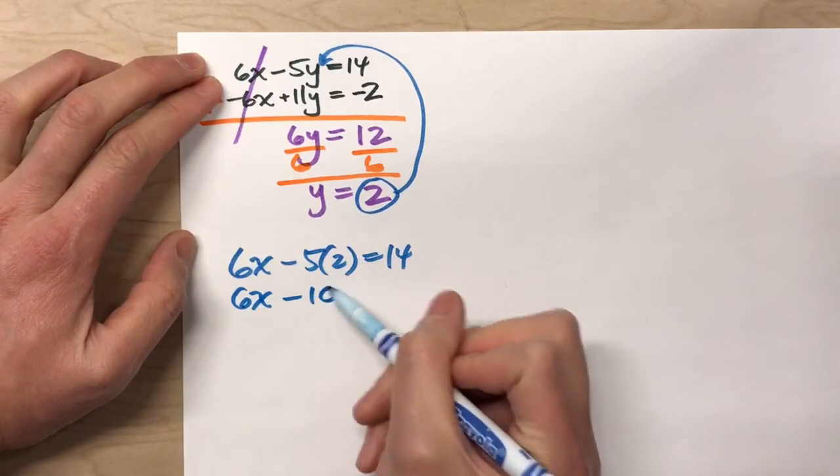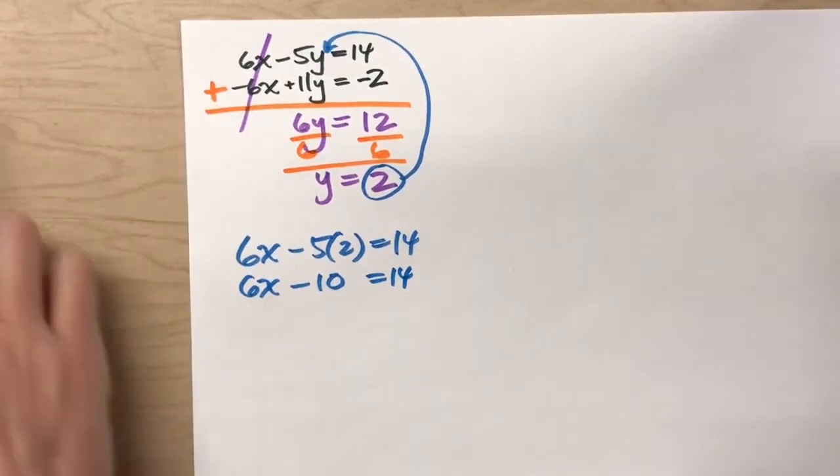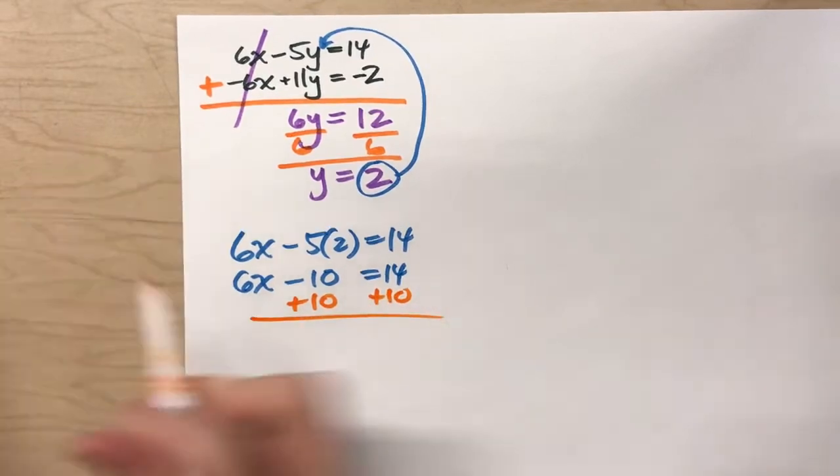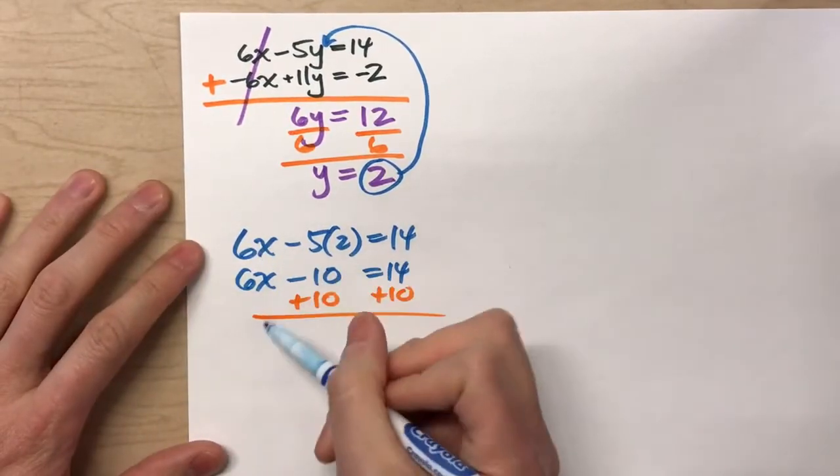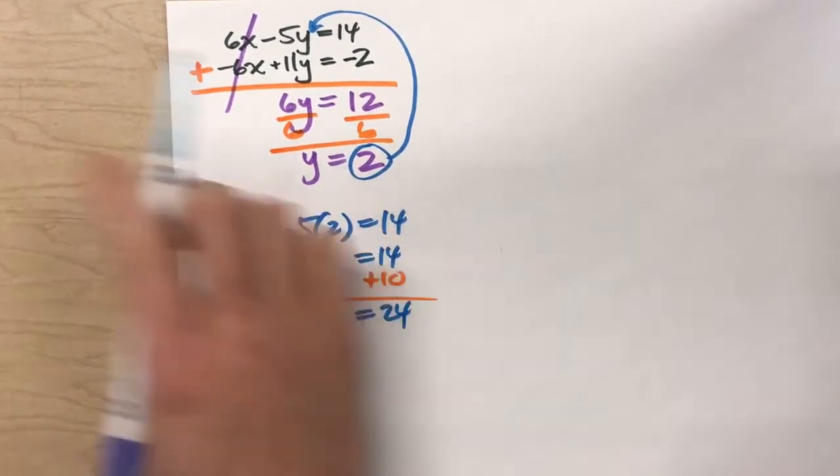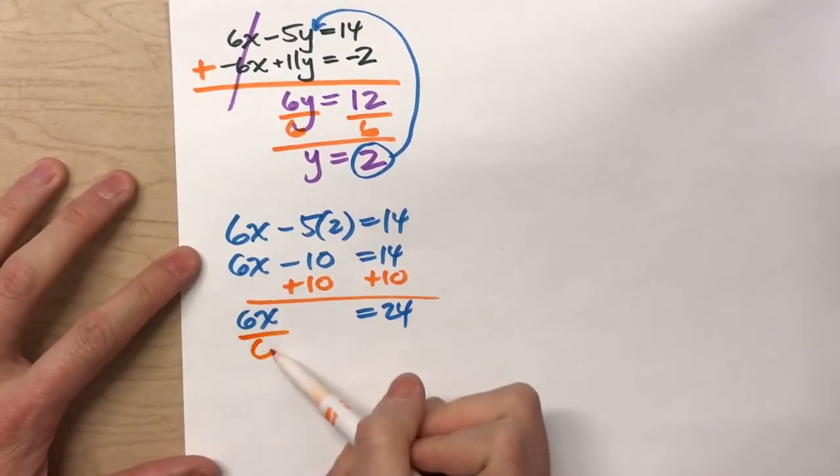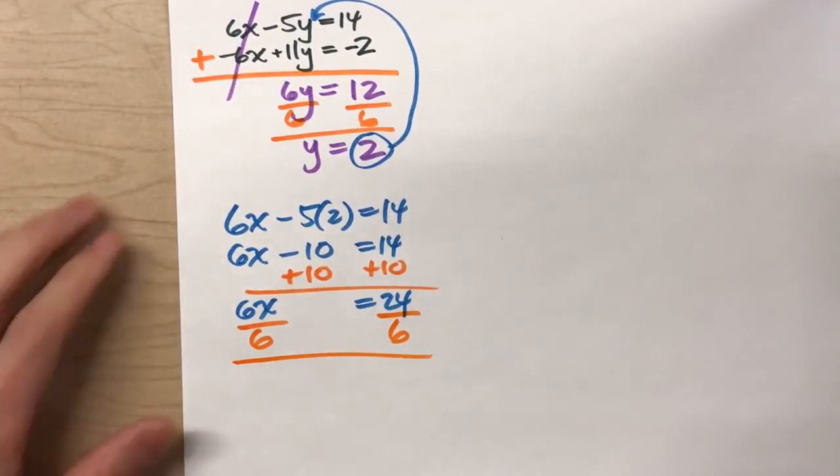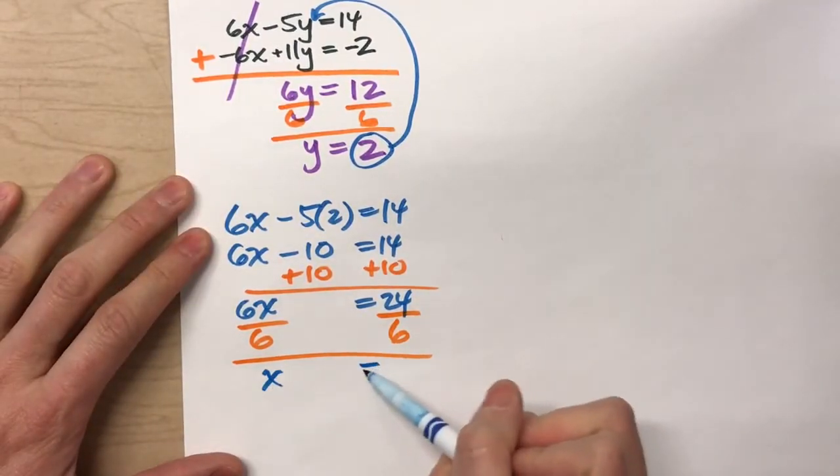6x minus 10 equals 14. Now, I can just solve this. Add 10 to both sides. 6x equals 24. And then, divide both sides by 6. x equals 4.